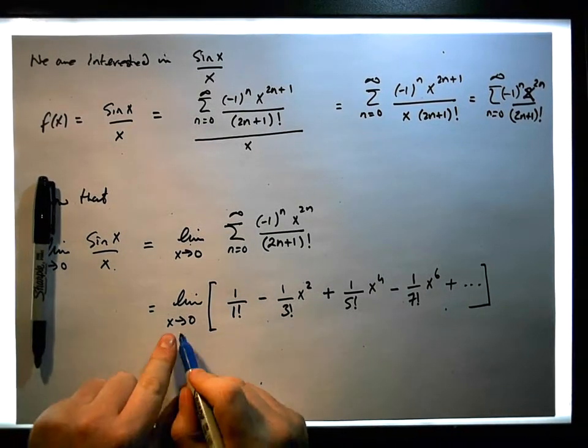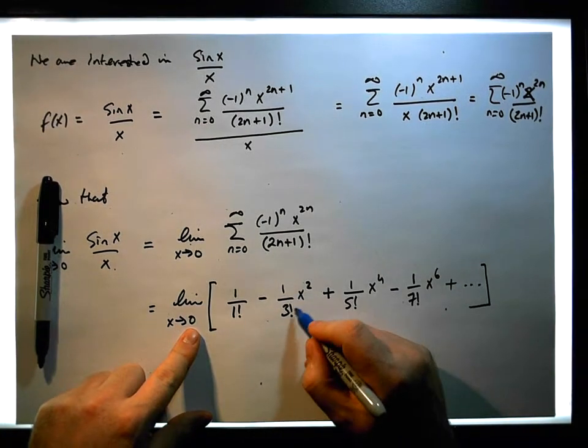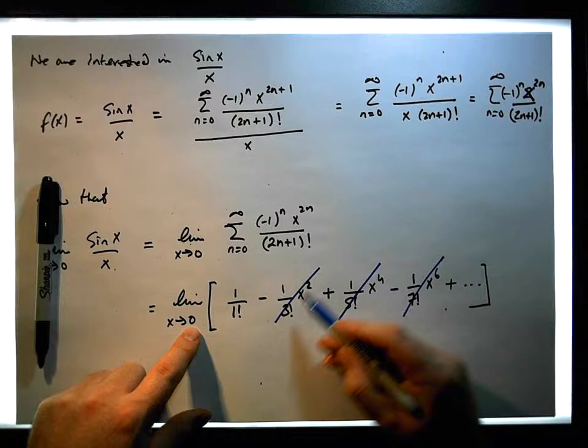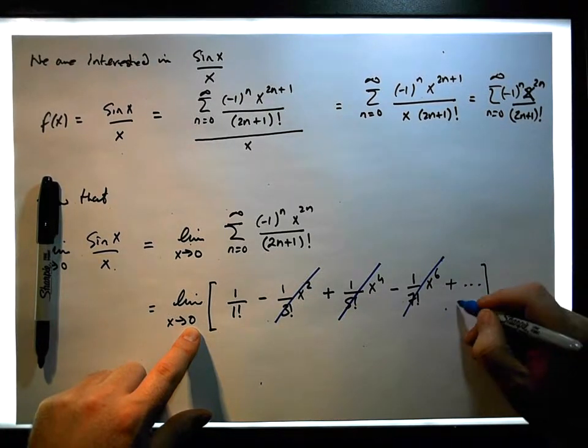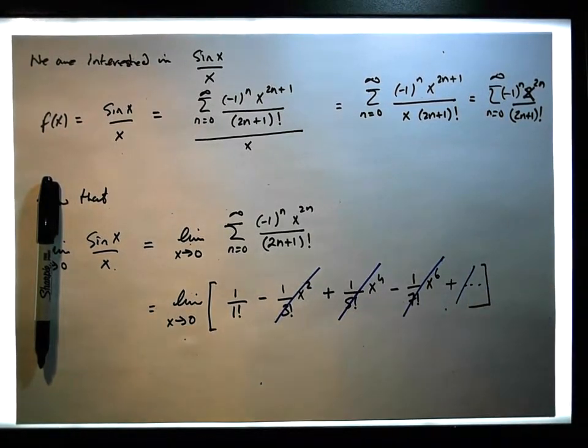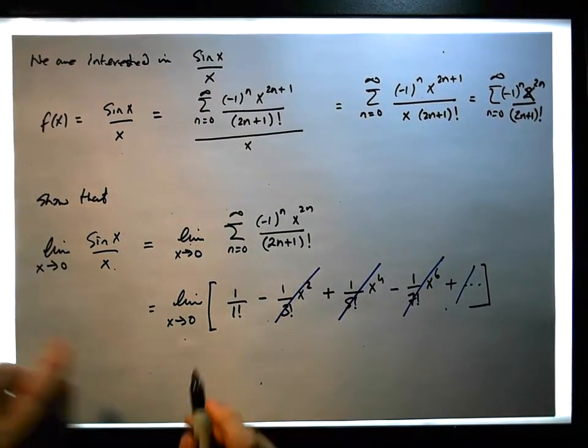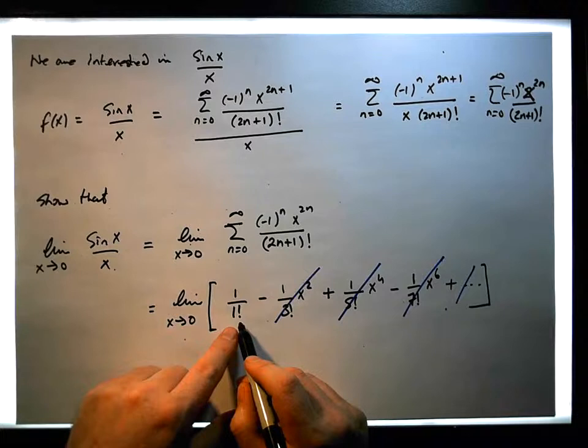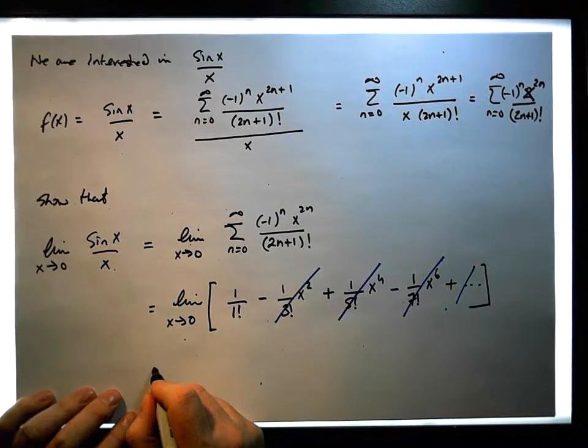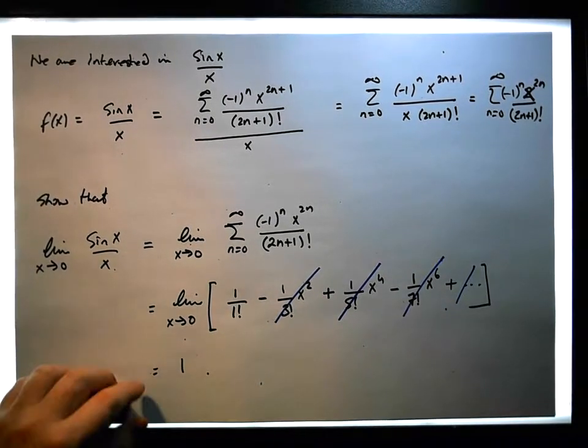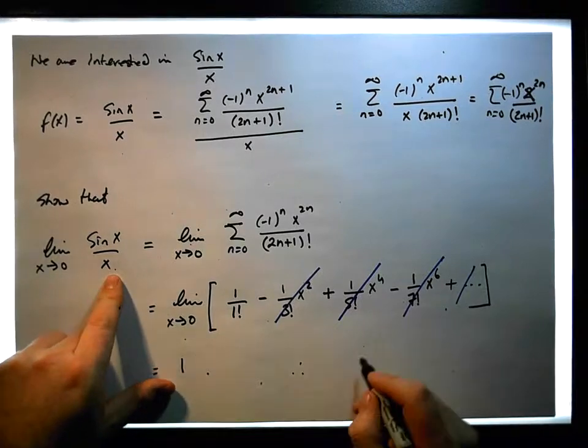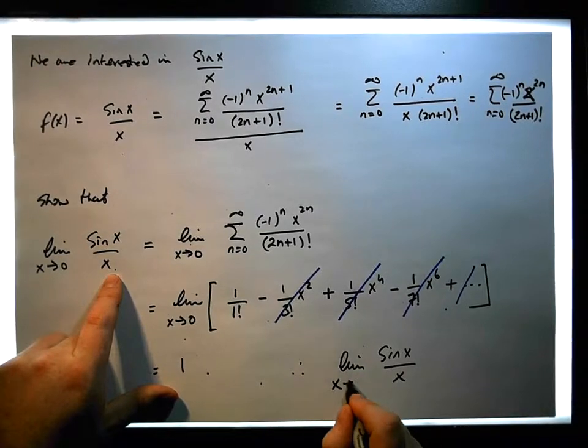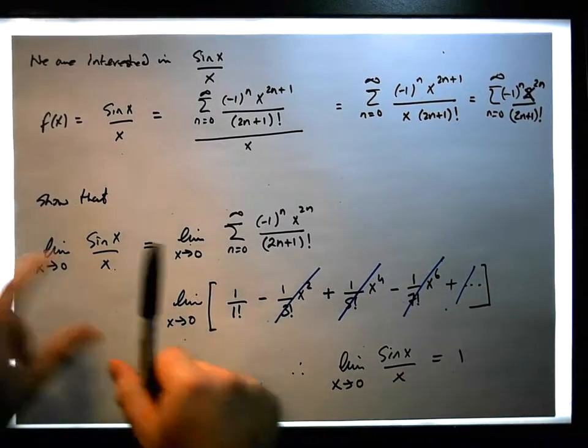Well, have a look at this. As x gets closer and closer to 0, this falls off, this falls off, this falls off, because effectively they become 0 all the way through, down through this infinite representation. So what we're actually left with is the limit of 1 over 1 factorial, which is the limit of a constant, which is equal to 1. And therefore, what we've shown is that the limit of sin x over x, as x tends to 0, is in fact equal to 1.